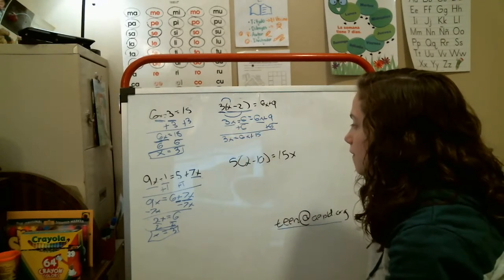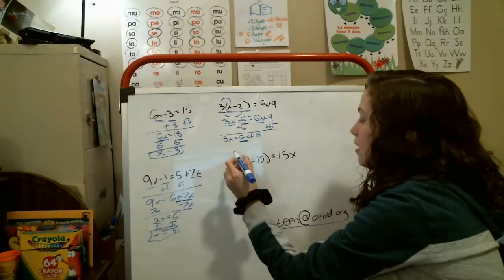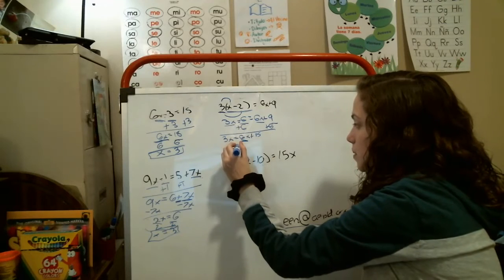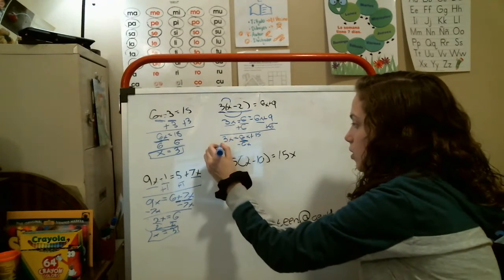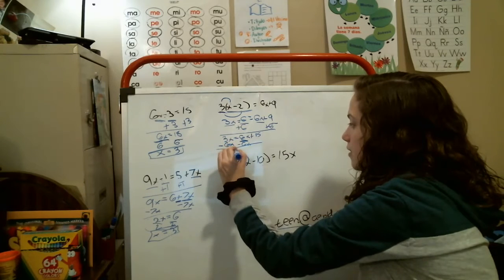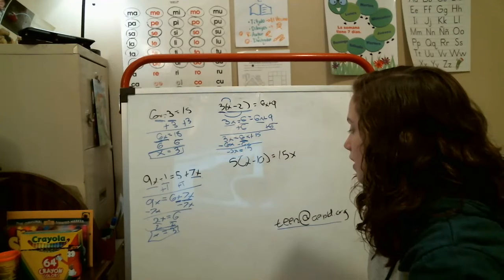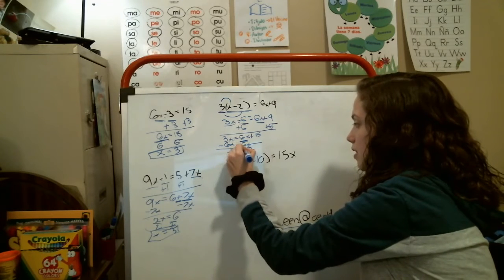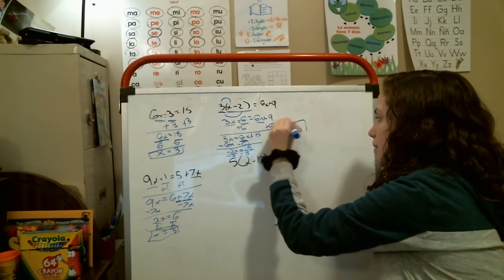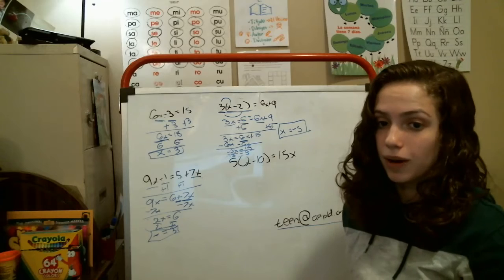Now we have to get rid of this 6x value because this value is all alone now, and that is what you need to do. This is a positive 6, so that means you have to subtract this 6x and also subtract it here. Now you have negative 3x equals 15. Again, we're at the end of the problem, and now we need to divide. We divide both sides by negative 3, and that would mean your x is negative 5, because negative 5 times negative 3 is positive 15. Two negatives make a positive.